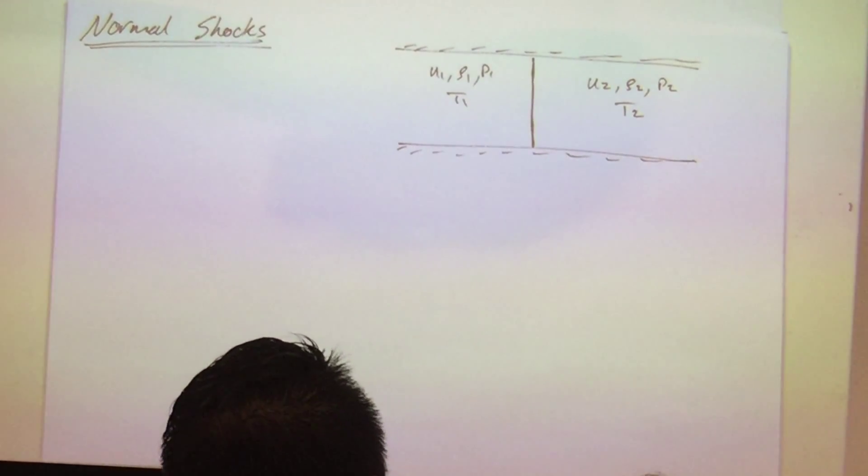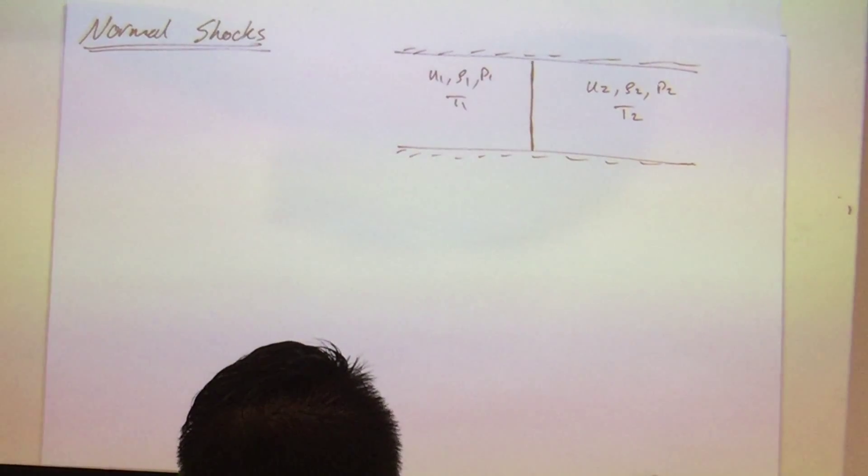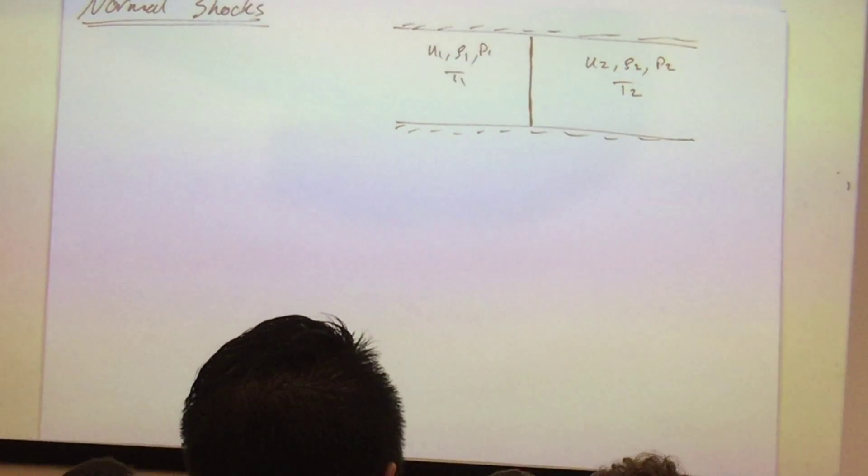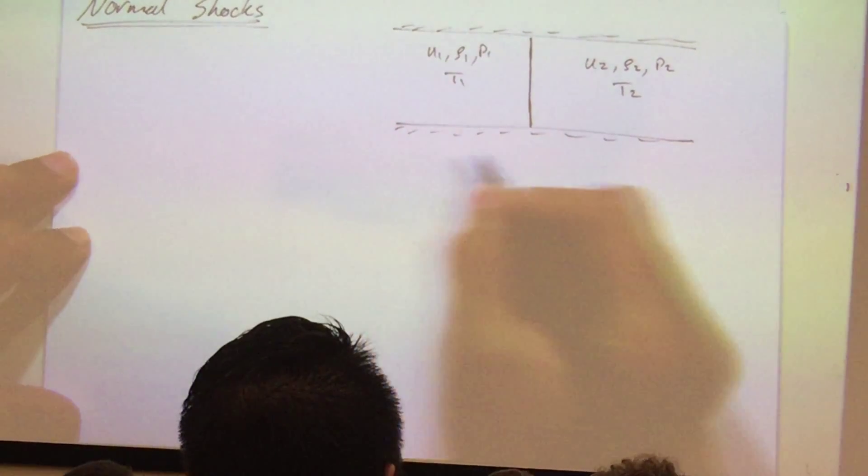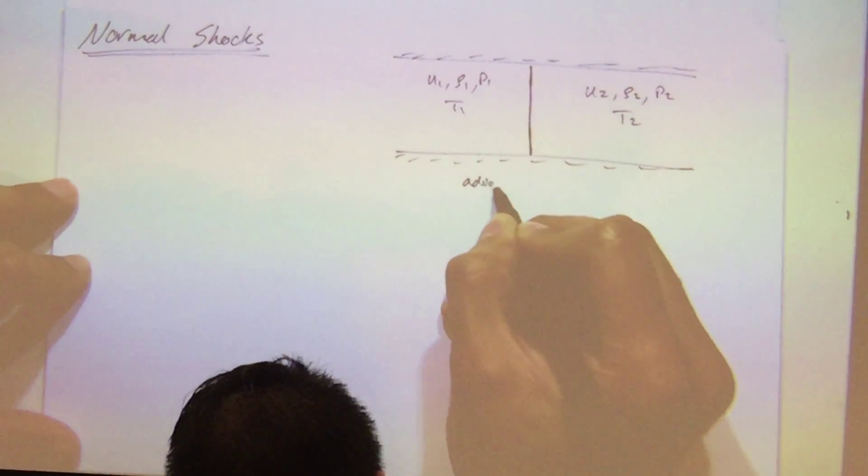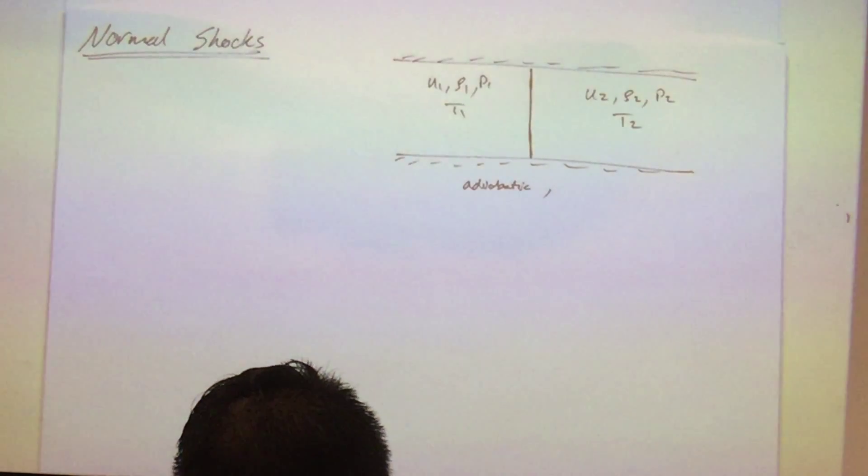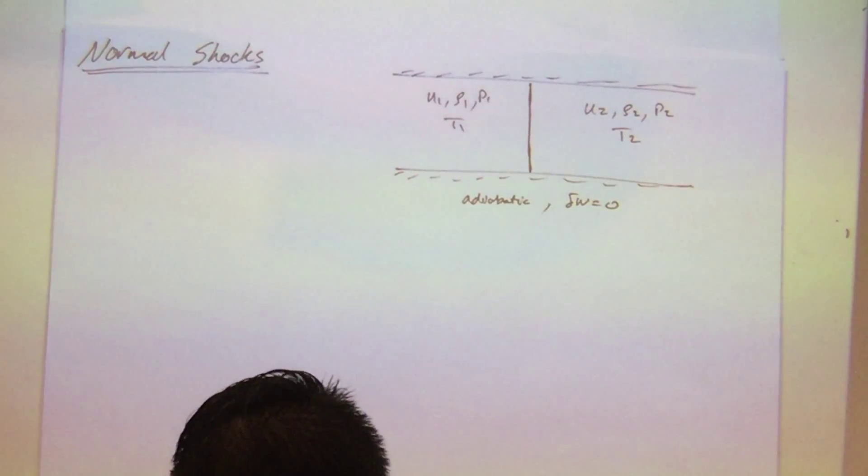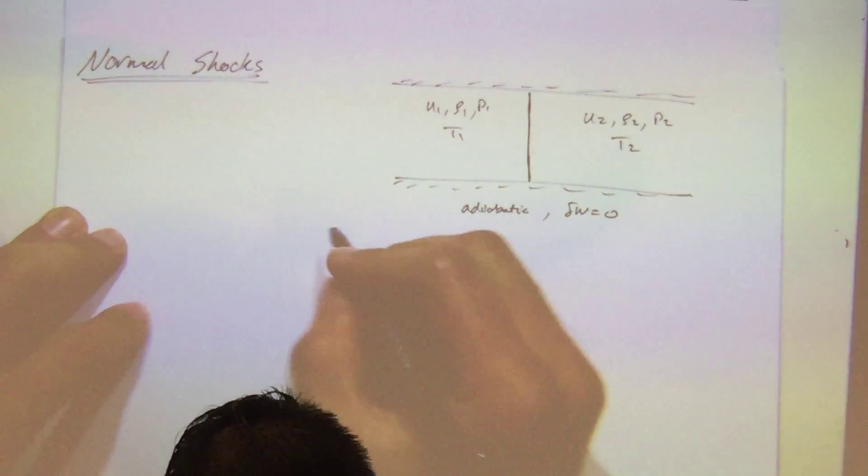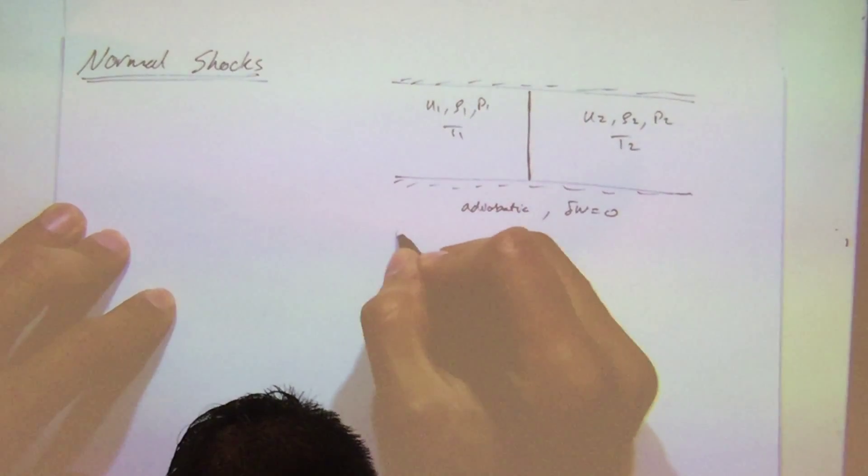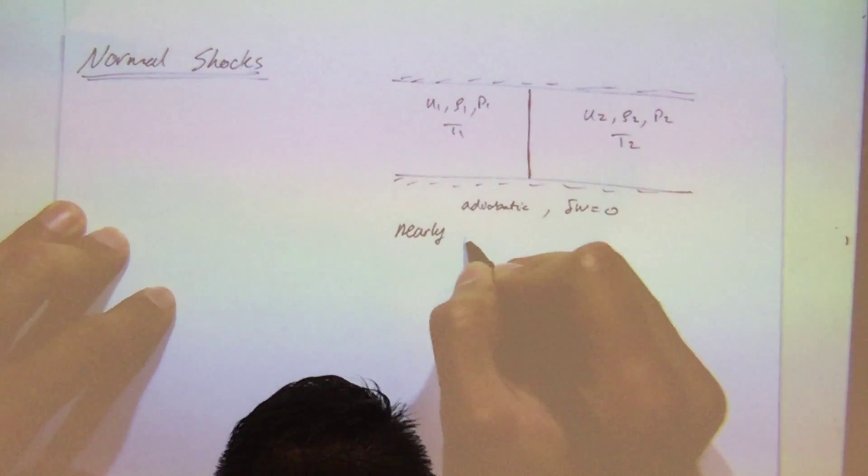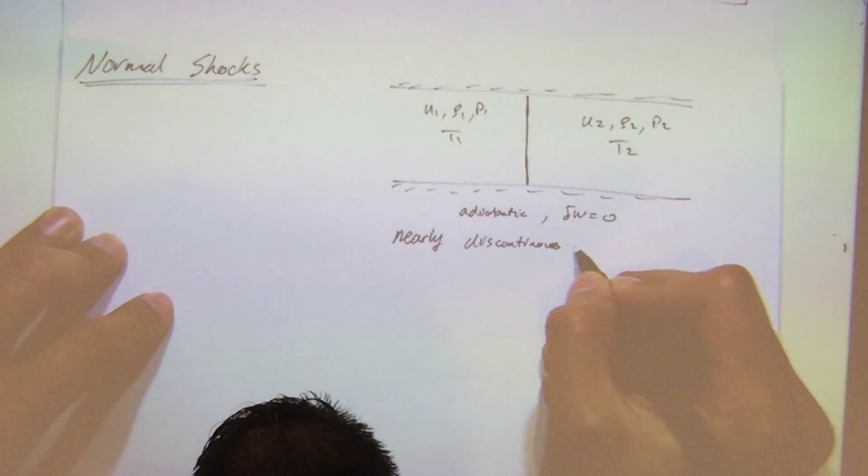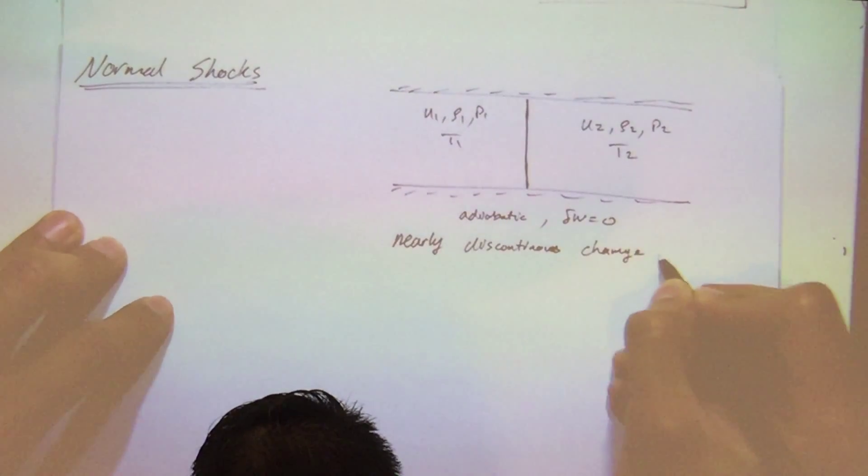But, physically, what's happening inside, things are drastically changing due to a non-isentropic process. Now, one thing to note here, we already know if we assume that this duct is adiabatic, and there is no work here that is happening. So, work is equal to zero. So, we want to treat the shock as a sudden discontinuity. So, I'm going to say merely discontinuous change in properties.